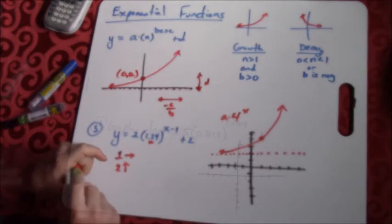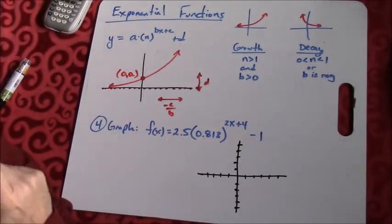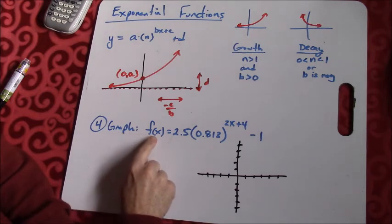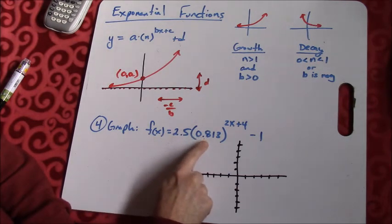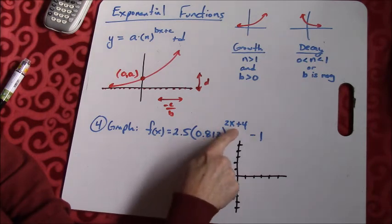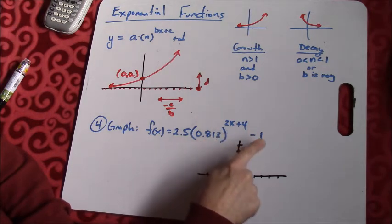All right, let me get you guys one to try. You guys go ahead and try this one. We want to graph f(x) equals 2.5 times 0.813 raised to the 2x plus 4 minus 1.